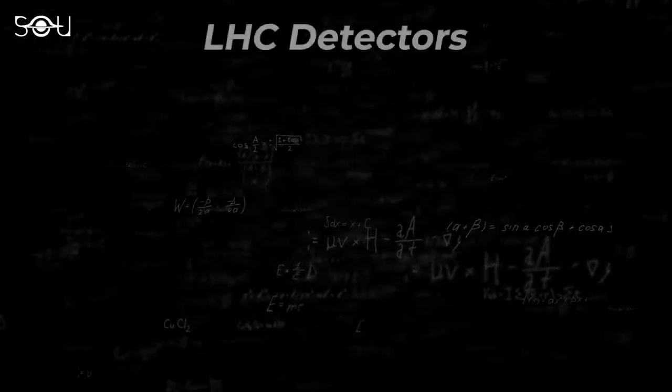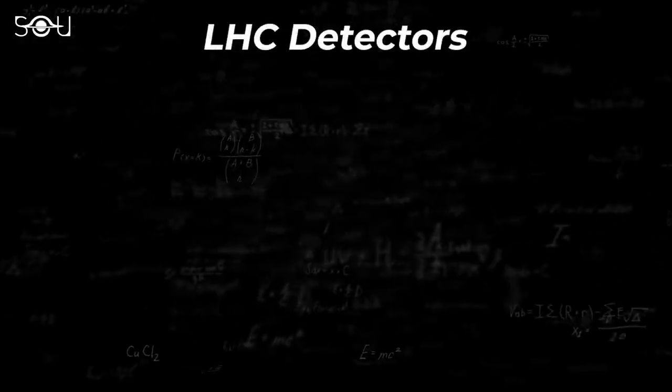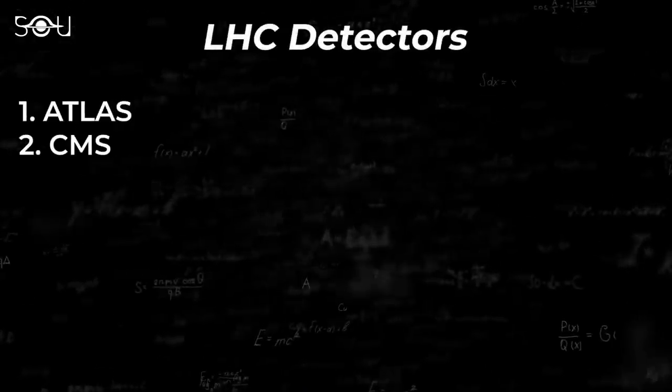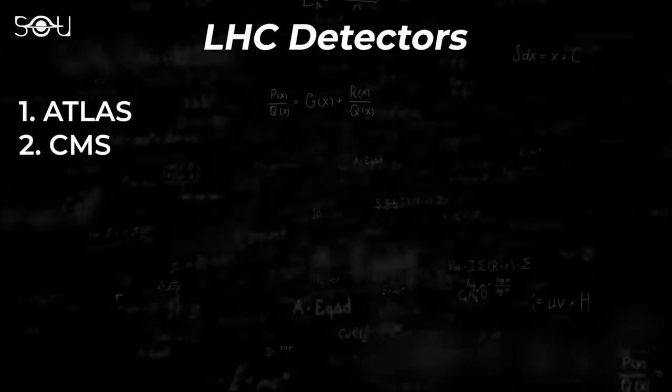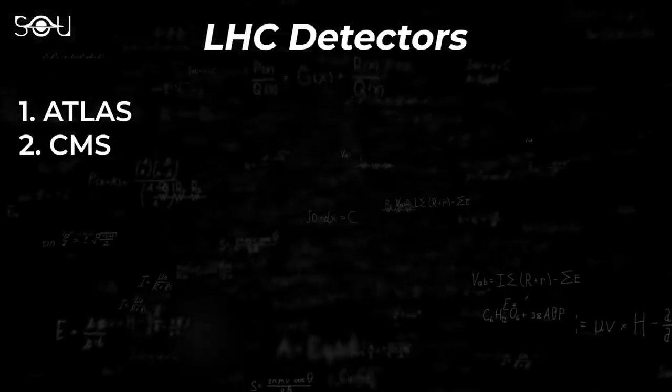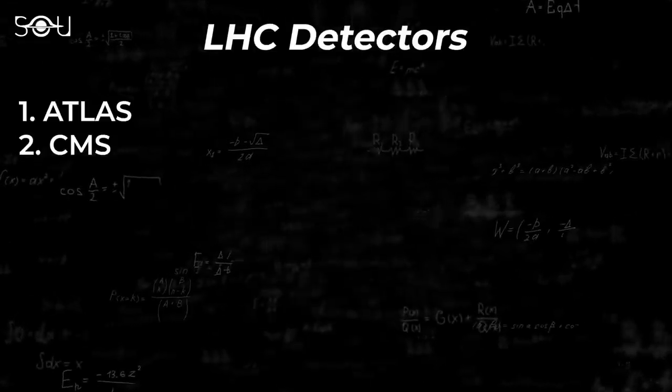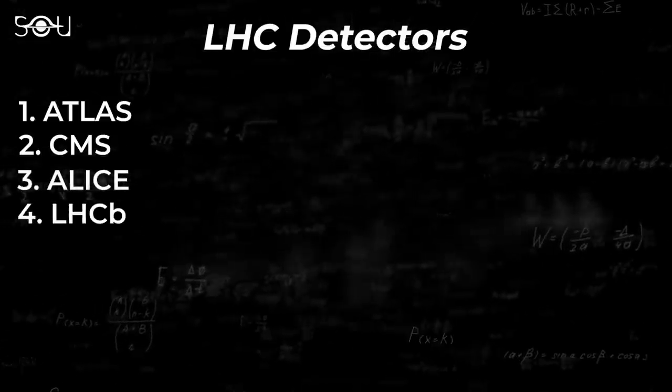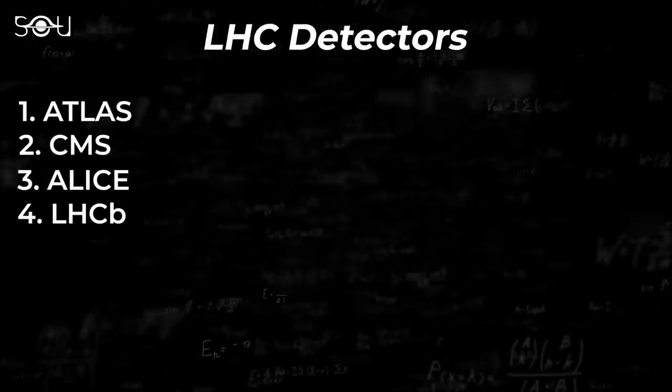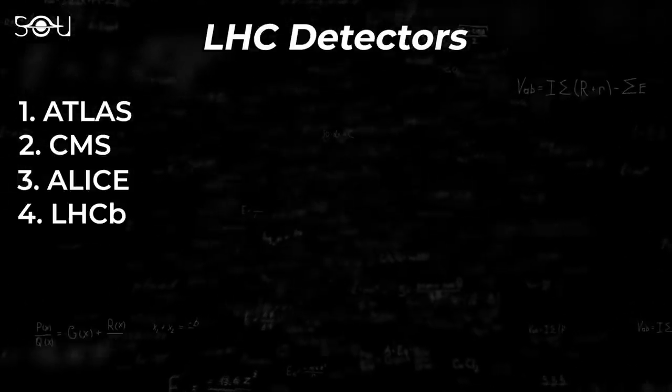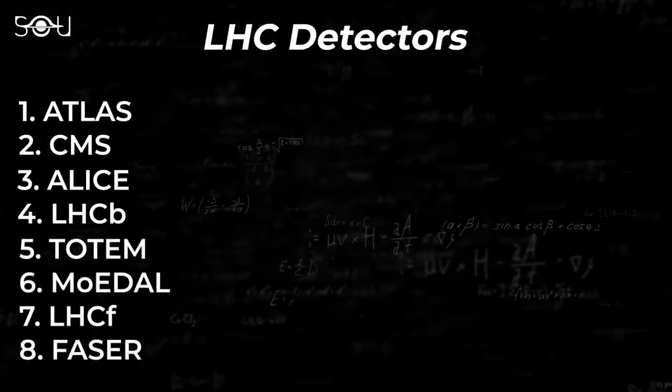LHC has a total of eight detectors designed for different purposes. While the ATLAS experiment and the compact muon solenoid CMS are large general-purpose particle detectors, ALICE and LHC-B have more specialized roles in understanding the interaction of matter.